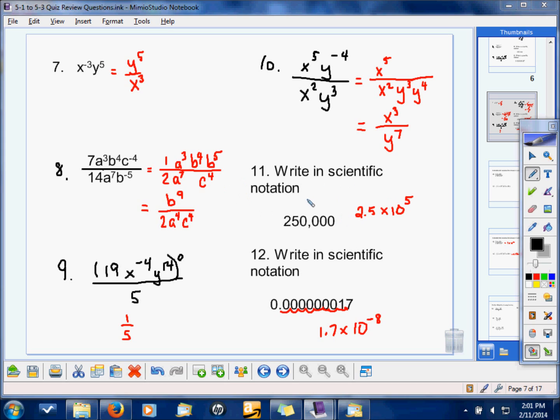For scientific notation. Remember I showed you how to do that in your calculator? You can just put that number in, push the mode button, and then choose scientific, and then hit enter twice, and you'll end up getting it in scientific notation. Or, you can do actually, what's a little easier, put a decimal between these two numbers and count over 1, 2, 3, 4, 5 places. 2.5 times 10 to the 5th.